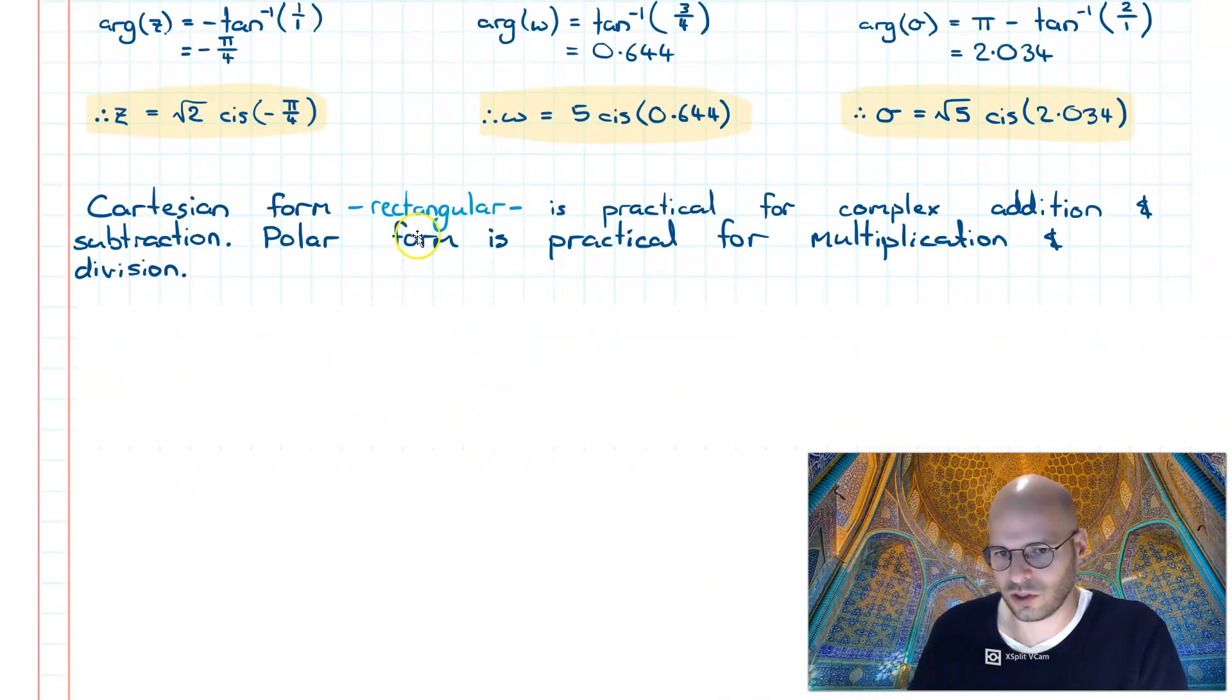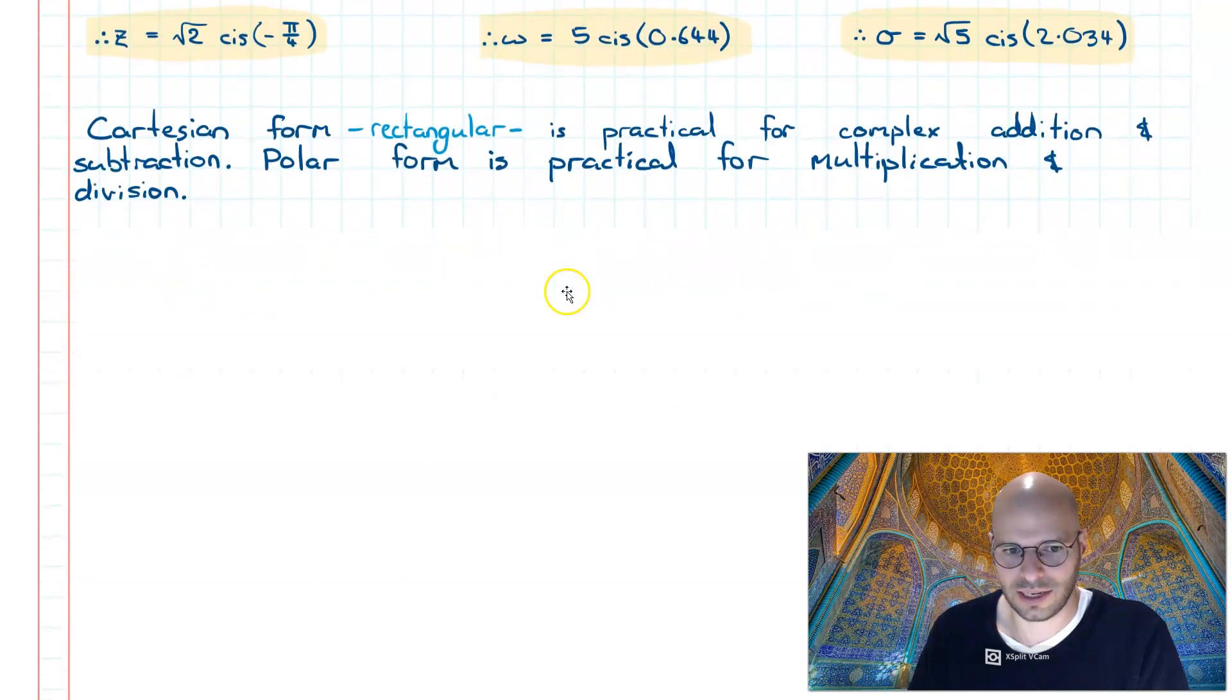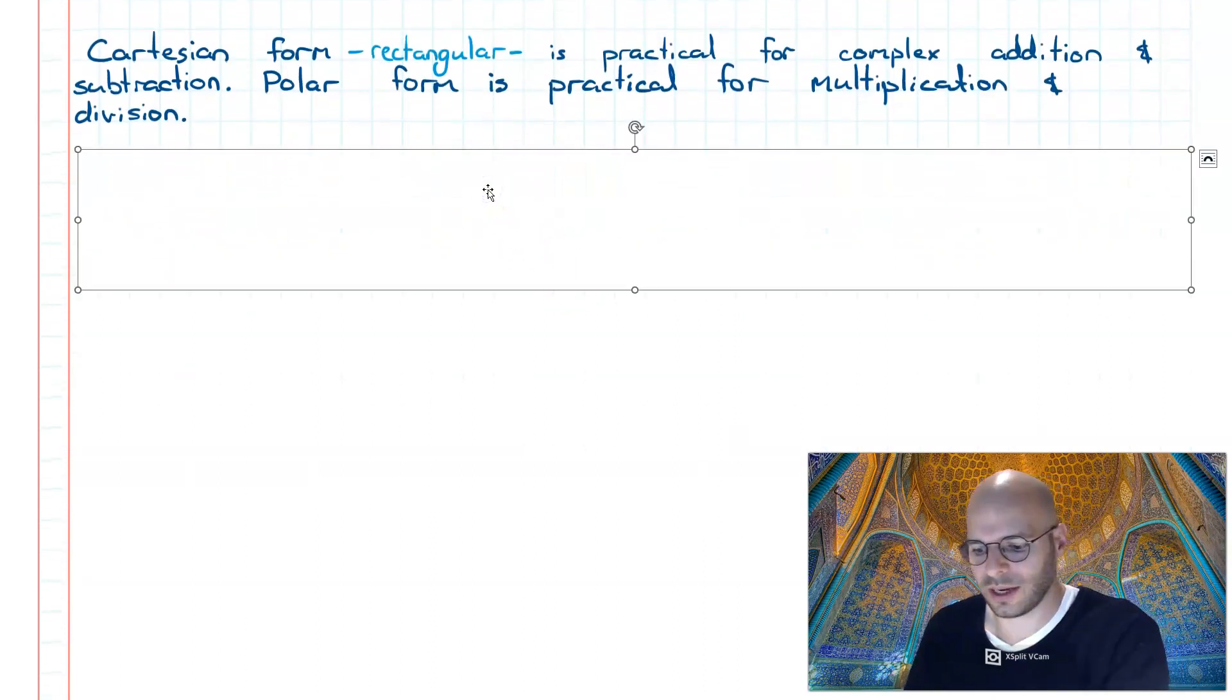Cartesian form, also known as rectangular, is a practical form for complex addition and subtraction. Polar form is practical for multiplication and division. Now looking at why this is the case.